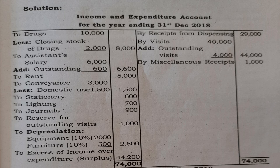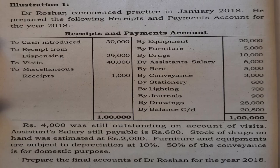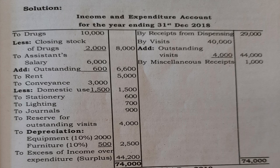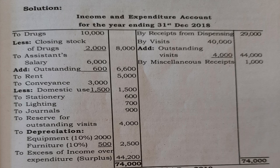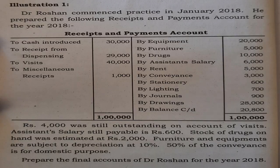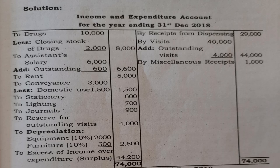Expenses on debit side: Drugs purchased 10,000 less closing stock of drugs 2,000 equals 8,000. Assistant's salary from receipts and payments account 6,000 plus outstanding salary 600 equals 6,600. Rent 5,000 as it is. Conveyance 3,000 less domestic use 1,500 equals 1,500 in outer column. Stationery 600, lighting 700, journal 900.